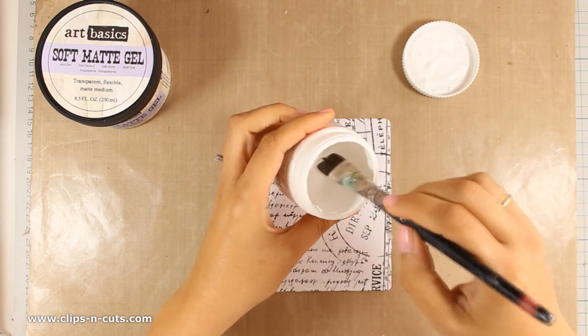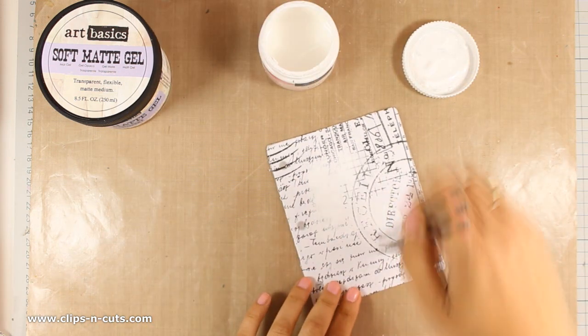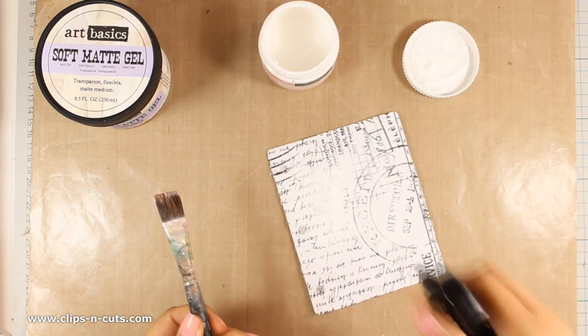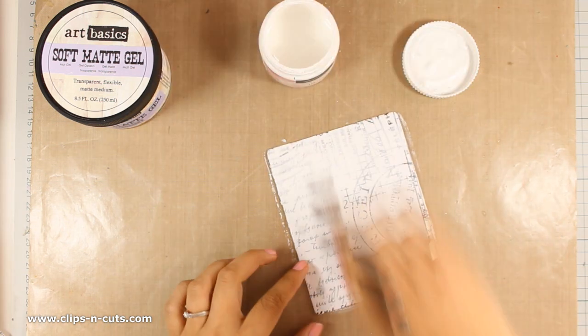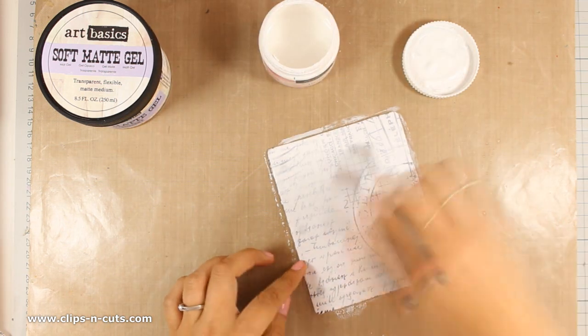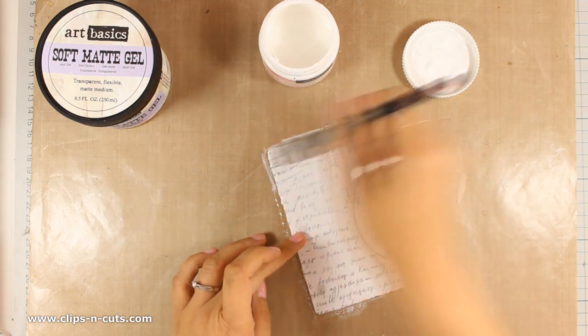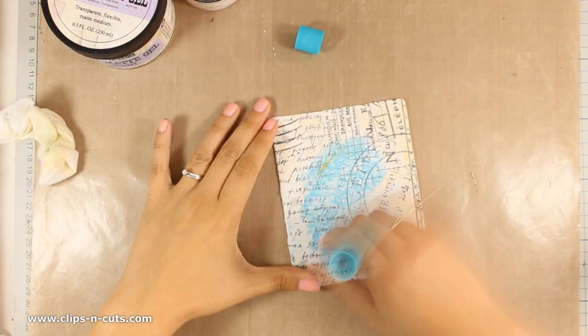Now that everything is dry, I am going to use my gesso to make a gesso wash all over my page. I am also spraying with water to make my gesso thinner. The idea is not to cover up the background but rather push it more to the background.